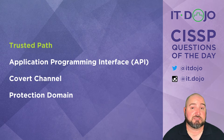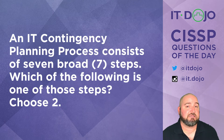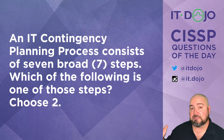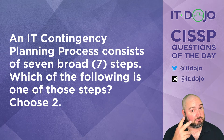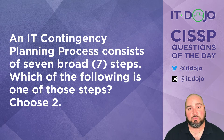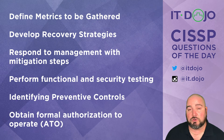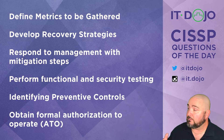Here comes question number two. An IT contingency planning process consists of seven broad steps. I'm going to give you a big long list of answer choices, and I want you to pick two — which of them is one of those seven steps? Here come the answer choices — lots of words. Click pause, read it through, and then click play again so we can talk about it.